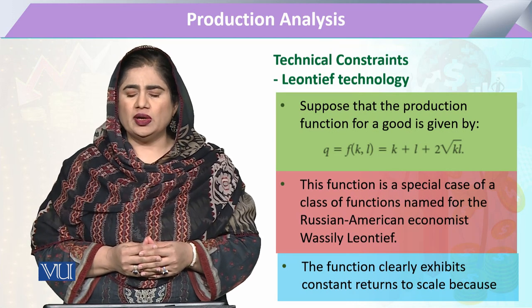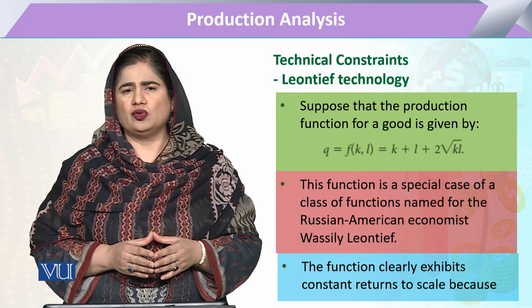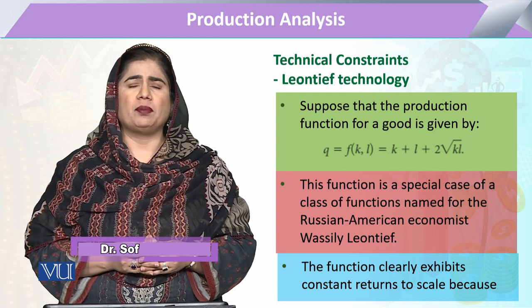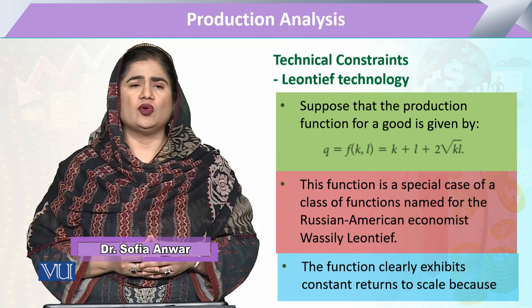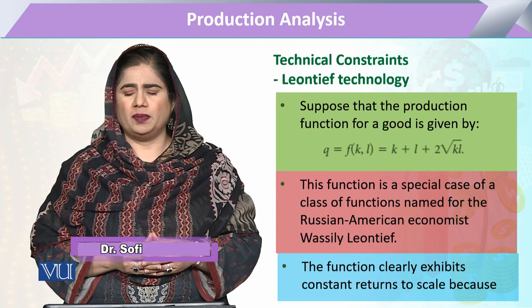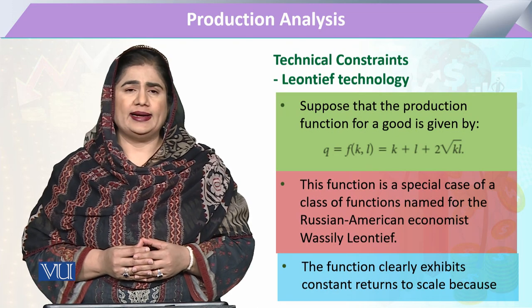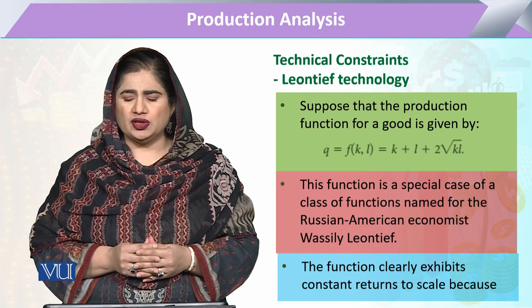Here is one production function for a good that is expressed as Q = f(k,l) = k + l + 2√(kl), where Q is the function of capital and labor.